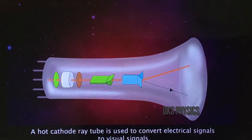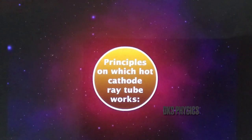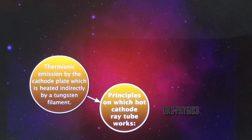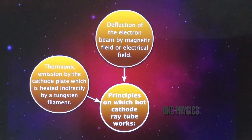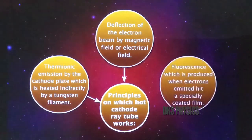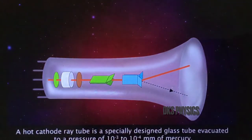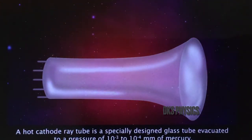A hot cathode ray tube is used to convert electrical signals to visual signals. It works on three principles: thermionic emission by the cathode plate heated indirectly by a tungsten filament, deflection of the electron beam by a magnetic or electric field, and fluorescence produced when emitted electrons hit a specially coated film. A hot cathode ray tube is a specially designed glass tube evacuated to a pressure of 10⁻³ to 10⁻⁴ millimeters of mercury.